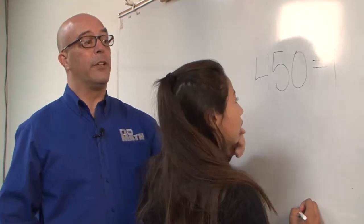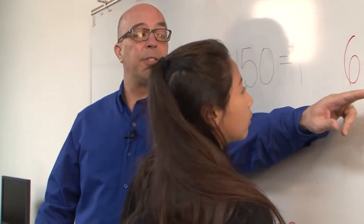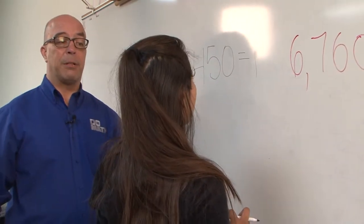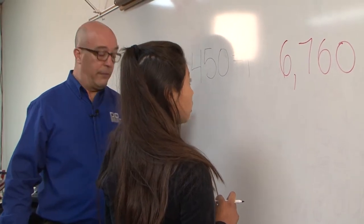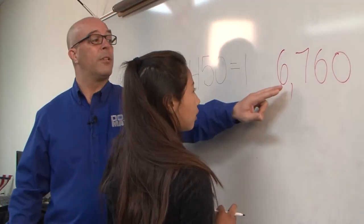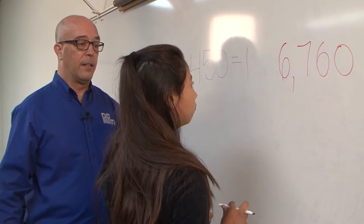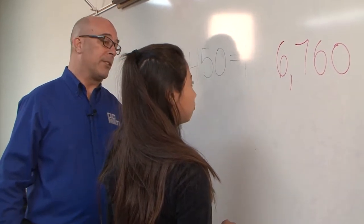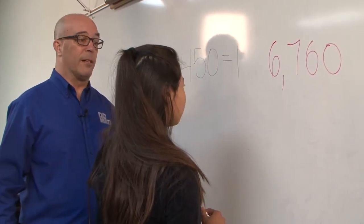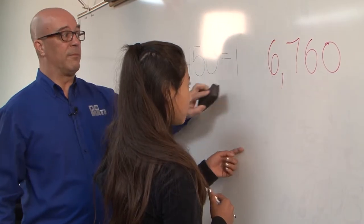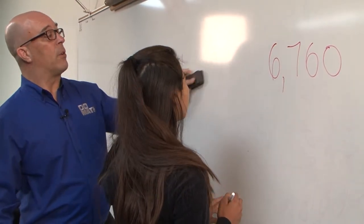All right? So if you're going to travel 6,760 miles, how do you think you're going to figure out how many books you're going to read? Division. Division. All right? So we're going to take this number and do what with it? Divide it by something, right? Yeah. Divide it by what? By that. Okay. So let's go ahead and divide it by 450.